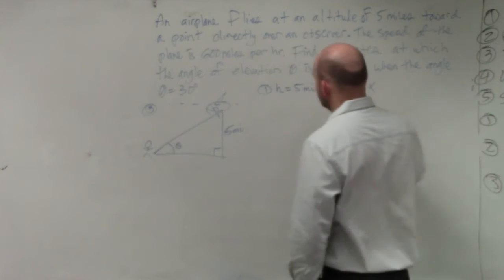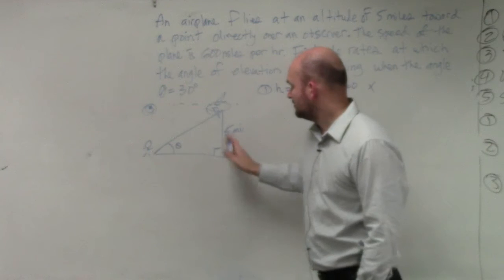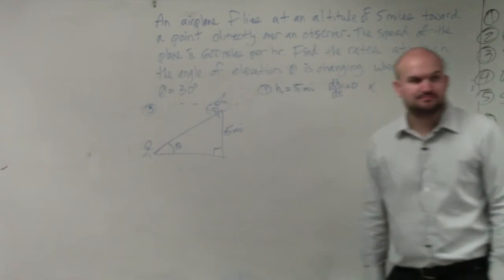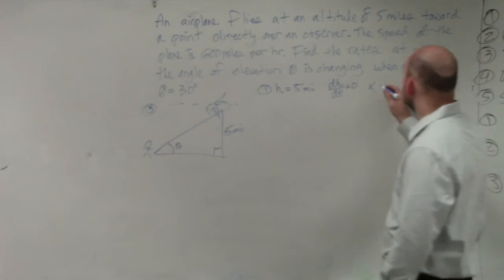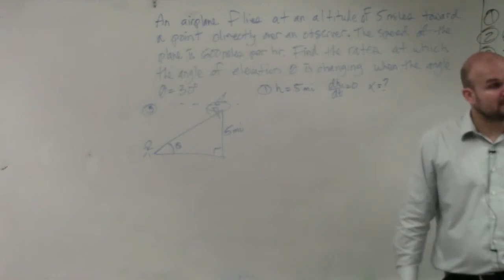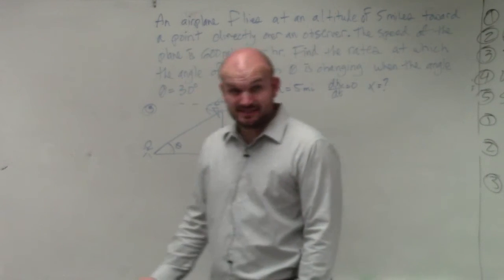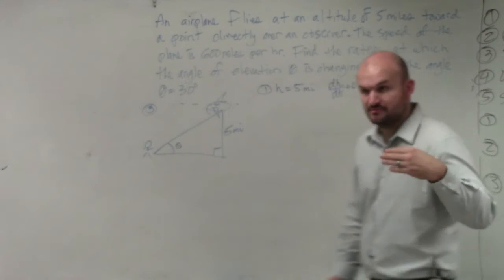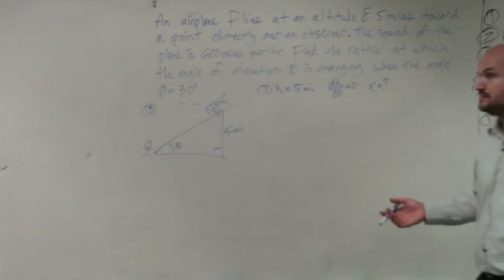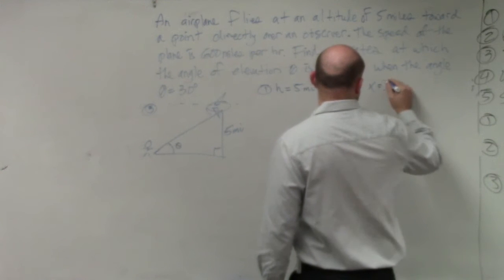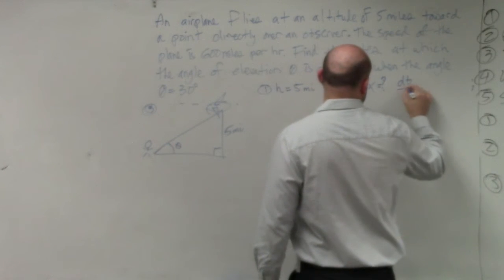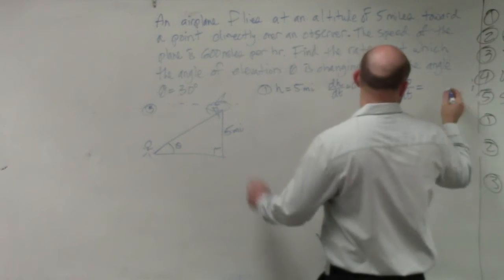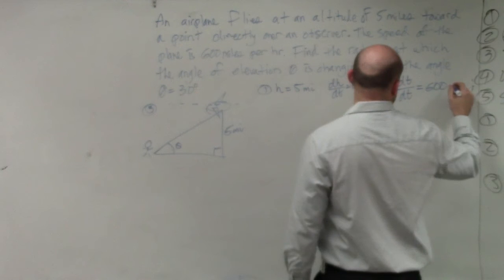Do we know what, let's just call this x, the distance, how far the distance is horizontally. Let's call this x. We don't know what that distance is. However, we do know the change in that distance, right? Because how far is it going? It's going 600 miles per hour, which is a rate. So therefore, we could say dx/dt is going to be 600 miles per hour.